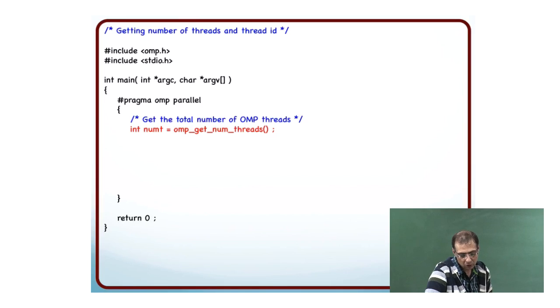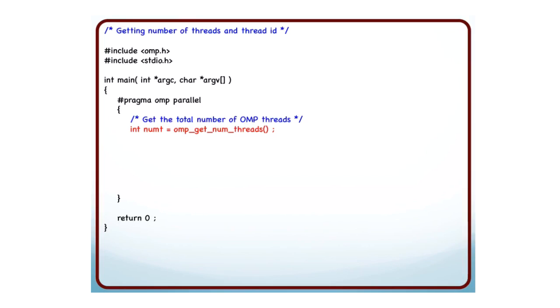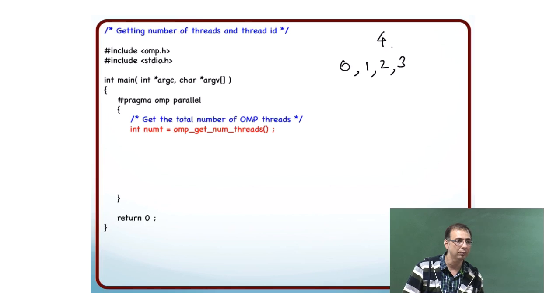What happens is that there are calls to figure out what is the total number of threads in the system, and there is a unique identifier given to each thread. It's called the thread ID, and on the basis of the thread ID and the total number of threads, I can decide what work I'm supposed to do. If you want to do a dot product and there are 4 threads, the threads will have ID 0, 1, 2, and 3. Can I use this information to figure out what work I'm going to do?